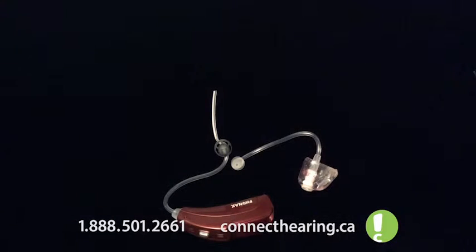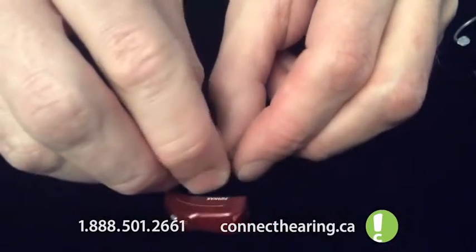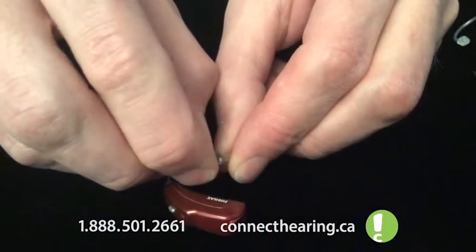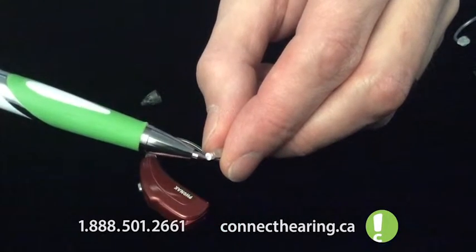First thing I'm going to do is I'm going to take off the rubber tip and show the wax guard that's in behind it. So kind of pinch it between your fingers and pull off. There's a Cerostop wax guard.